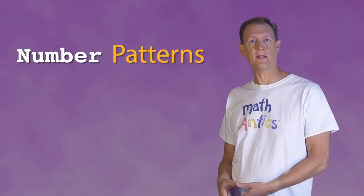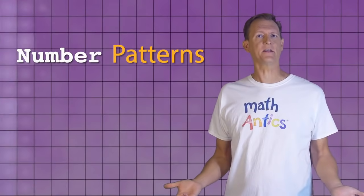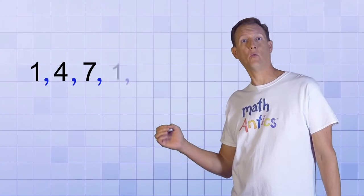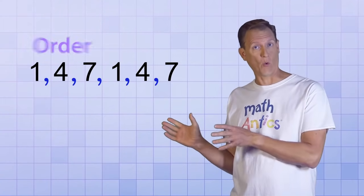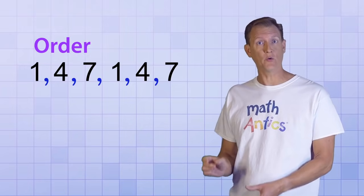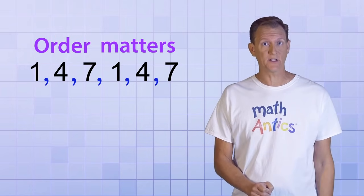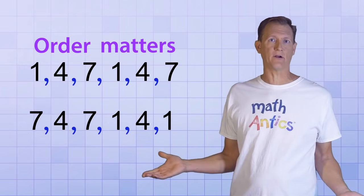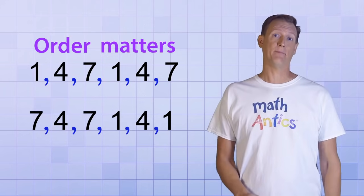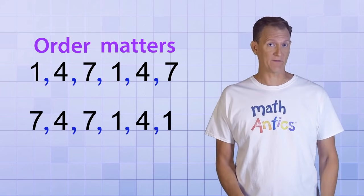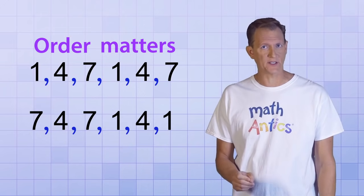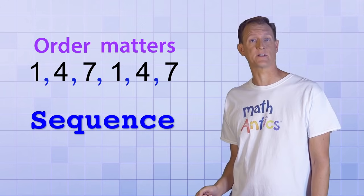Anyway, number patterns can be formed by repeating numbers, like this: 1, 4, 7, 1, 4, 7. Notice how the order of the pattern really matters — if you switch any of the numbers, it becomes a different pattern. In math, when you have a set of numbers or elements where the order matters, it's called a sequence.